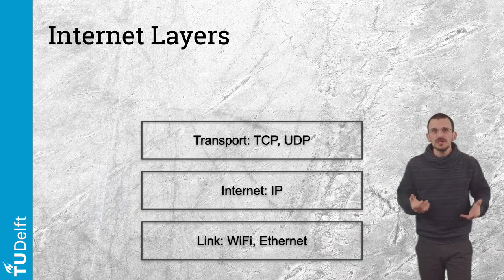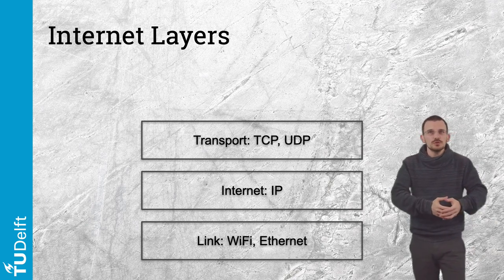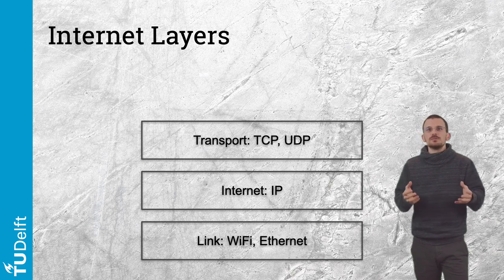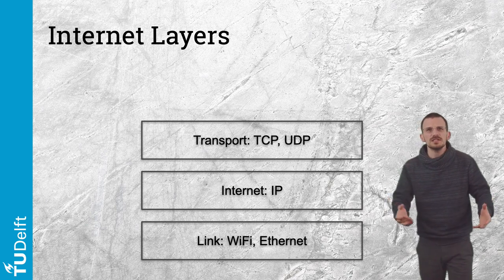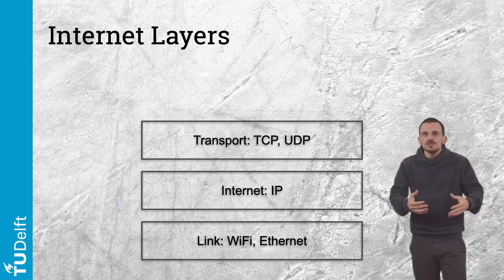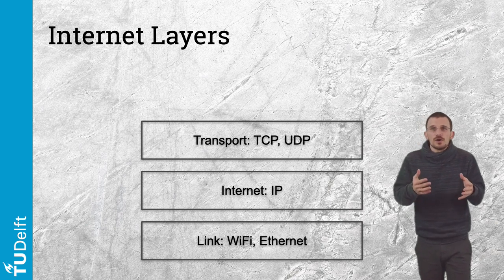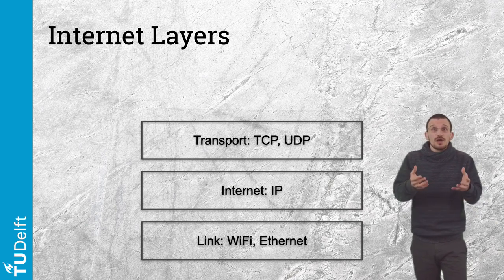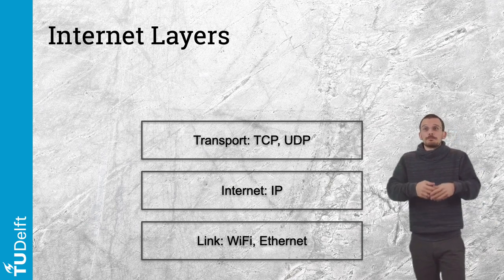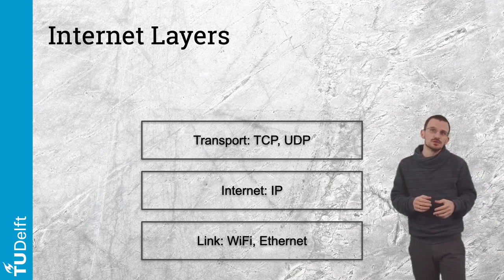Then we have the transport layer, establishing a communication channel between two computers on that network. The information from its source to its destination crosses many different network devices that route the information like crossroads — the term router might be familiar to you, and this is an example of such a crossroads. TCP is a protocol at this layer that ensures that every piece of information leaving the source is received in good order by the destination.